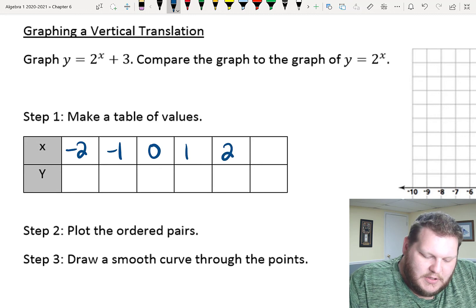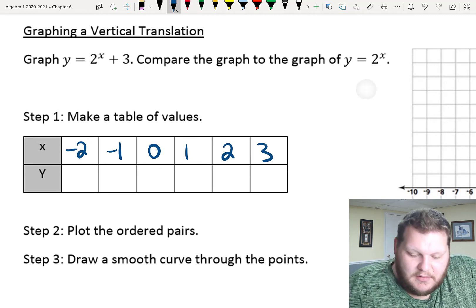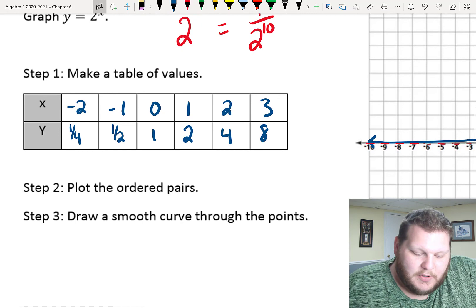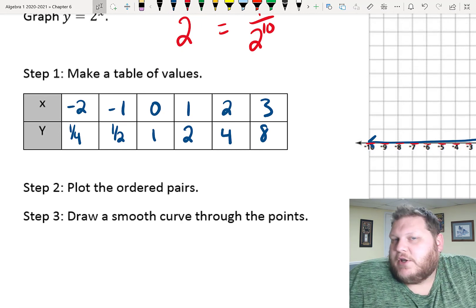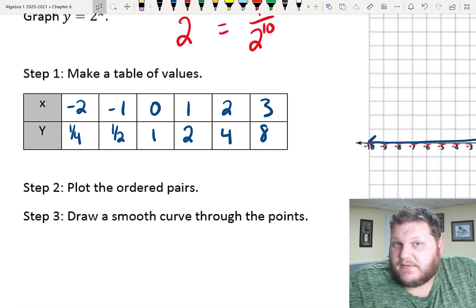I know if I use the same x values, negative 2 to positive 3. I'm basically taking this table up above, 1 fourth, 1 half, 1, 2, 4, and 8, and just adding 3 to all 6 of those values.